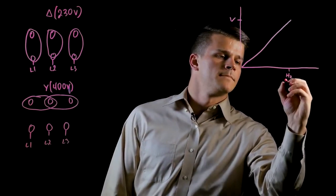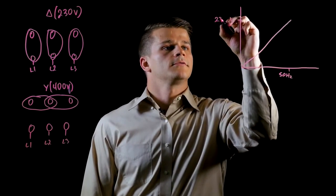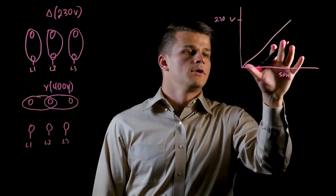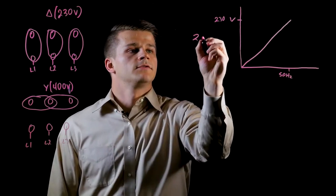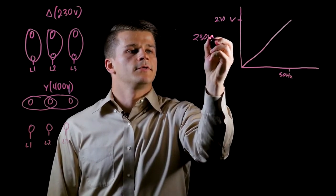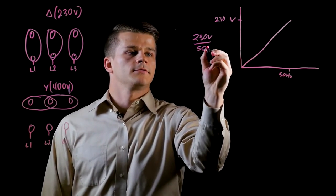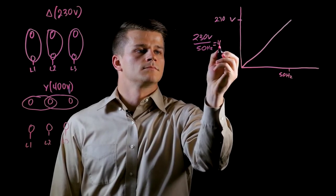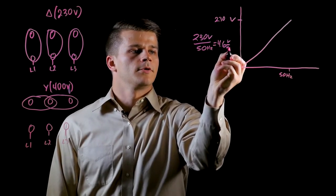Here at 50 Hertz and 230 volts for the Delta configuration, we have this linear relationship of voltage and torque. If we do some quick math, we have 230 volts over 50 Hertz, which equals 4.6 volts per Hertz.